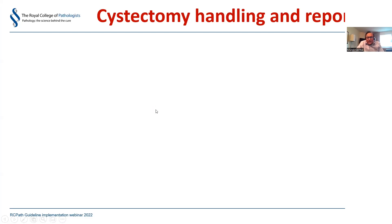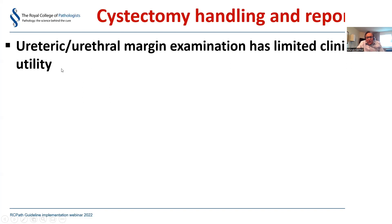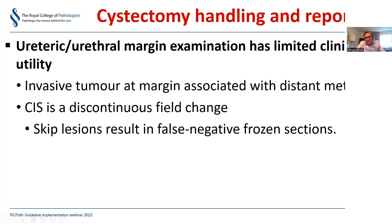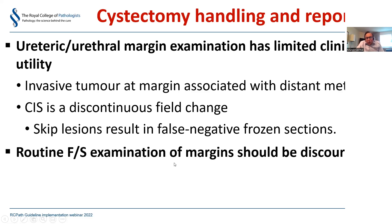Regarding cystectomy reporting, the ureteric and urethral margin examination has very limited clinical utility. If you have invasive tumor at the margin, patients don't come back with local recurrences - they come back with distant metastasis. CIS at the margin is not reliable because CIS is a field change and discontinuous - just because a random plane of section is negative does not mean the patient doesn't have CIS in the remaining ureter. You get skipped lesions which result in false negative frozen sections.